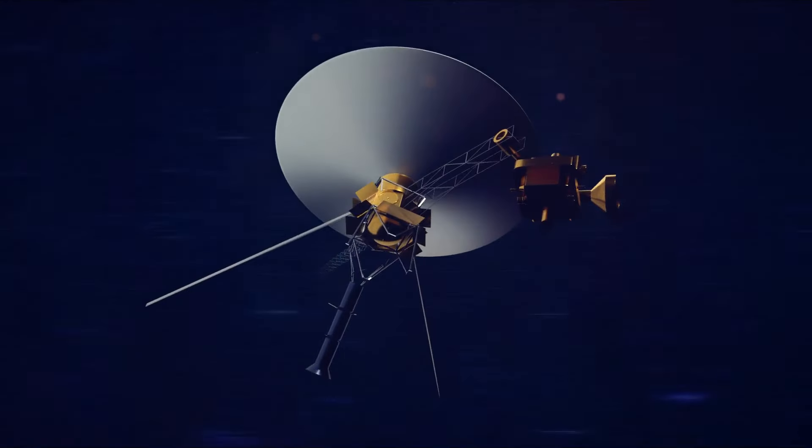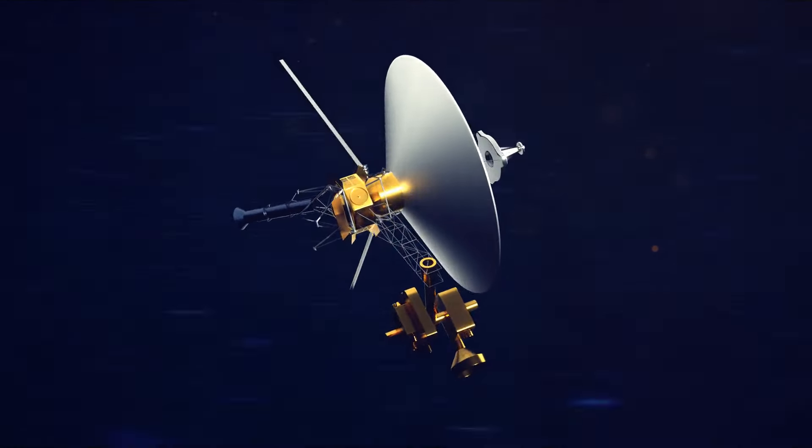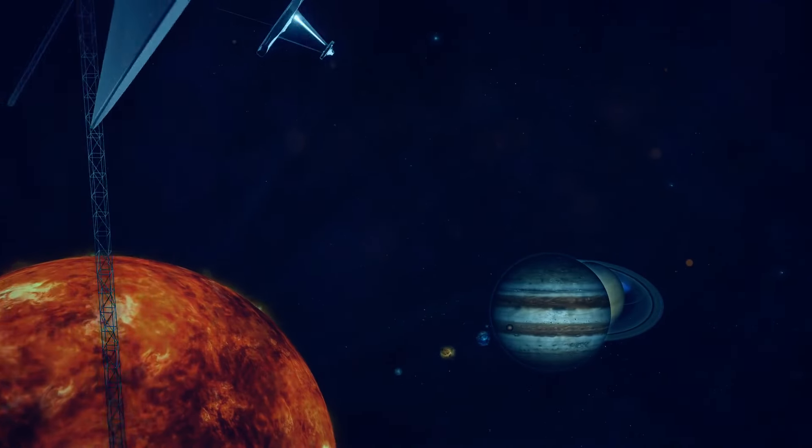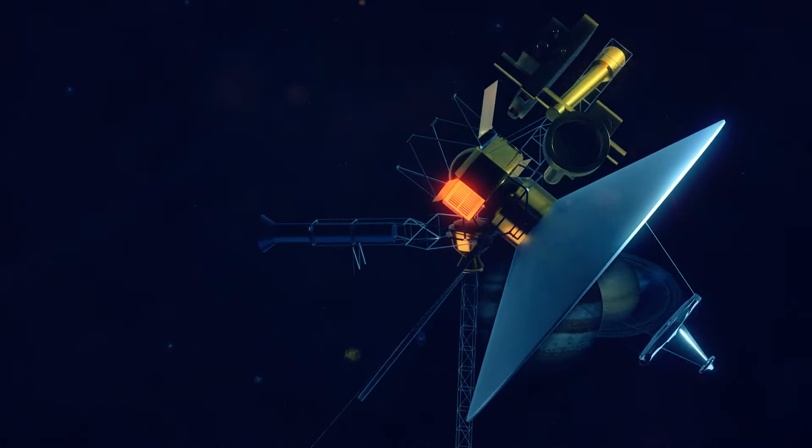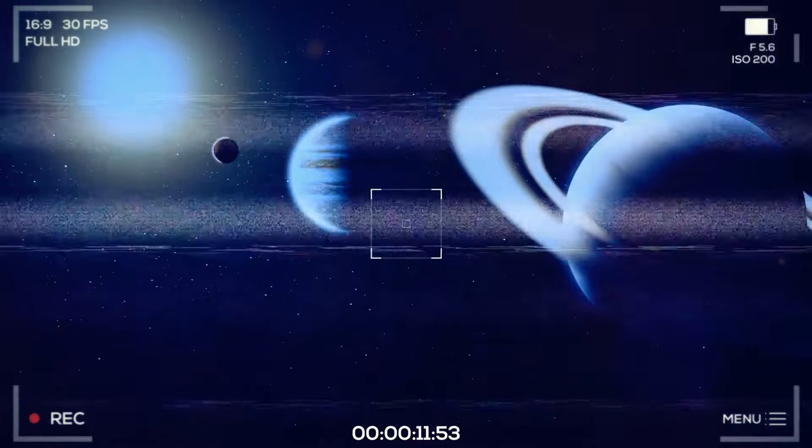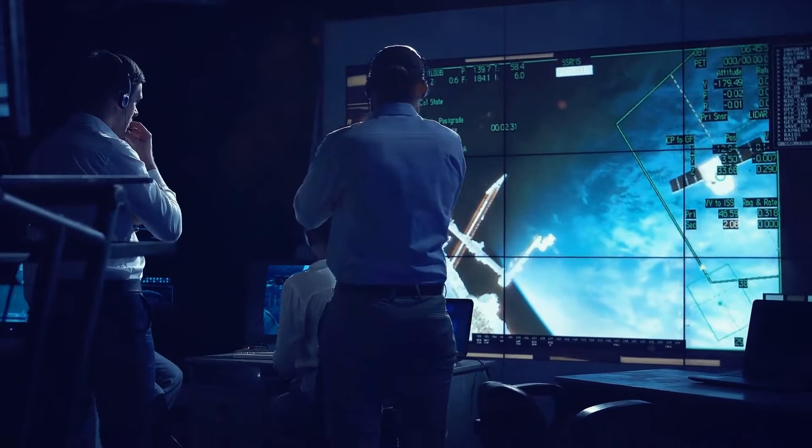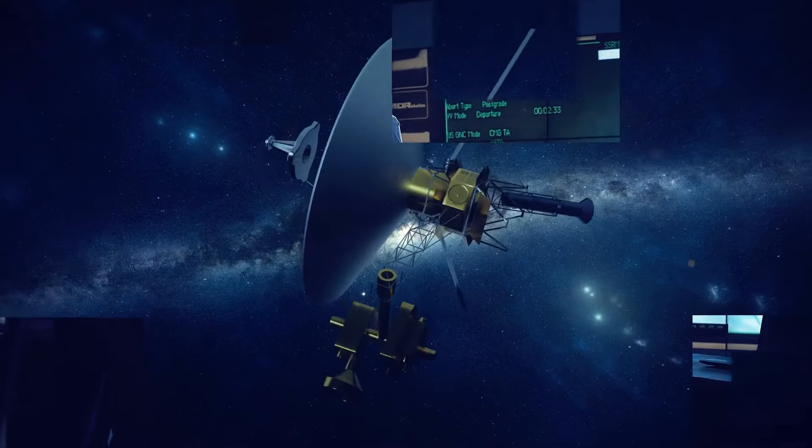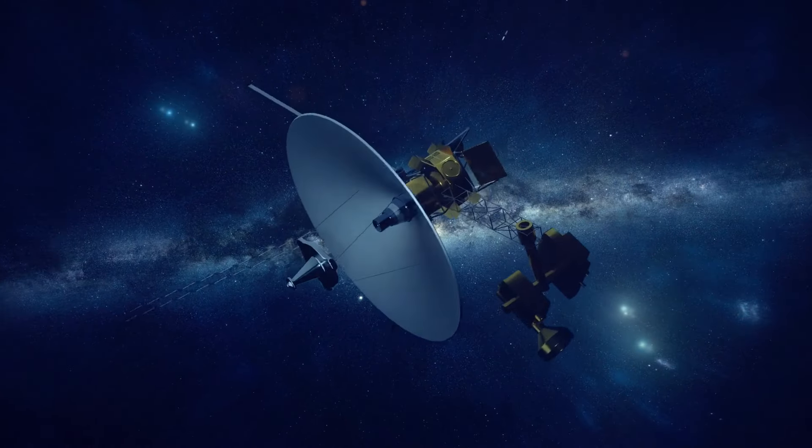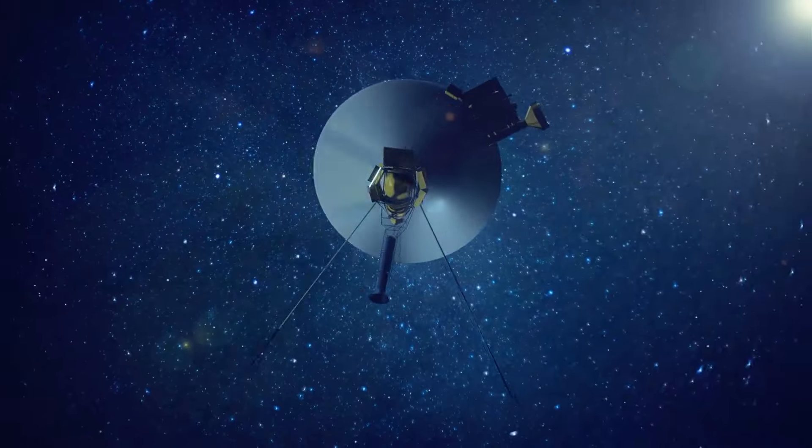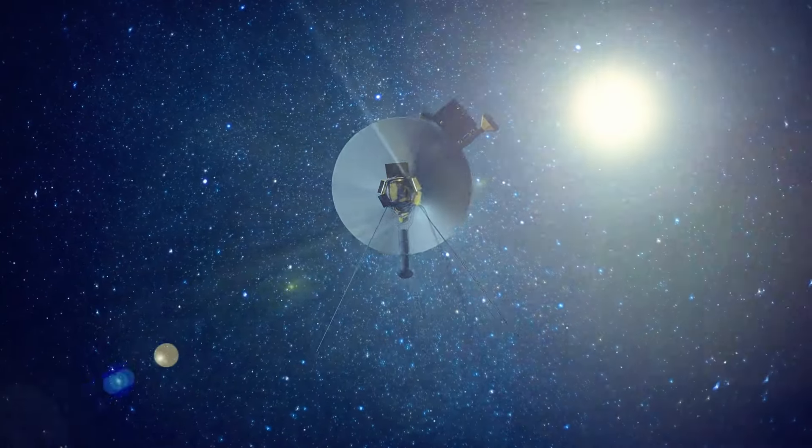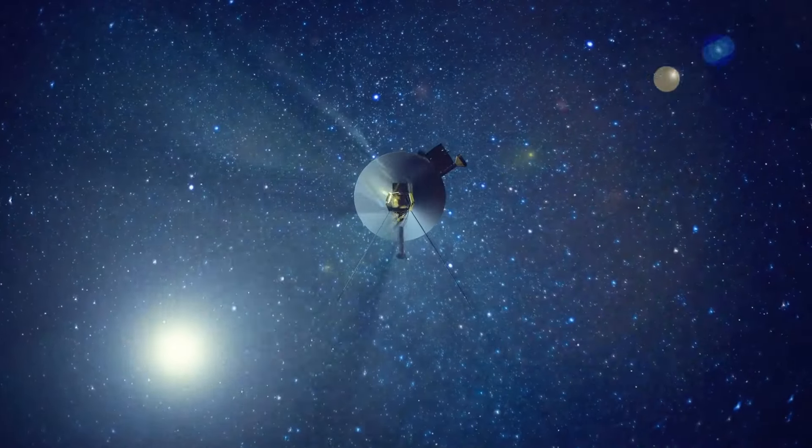Voyager 1 is an American space probe. Scientists from NASA sent it into space on September 5, 1977. Voyager's goal was to explore the outer planets of our solar system, namely Jupiter and Saturn. Initially, scientists assumed that the mission would take about 5 years. The probe exceeded all expectations. Not only did it fulfill its mission, but it's still working, for much longer than expected.